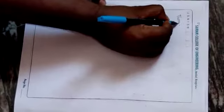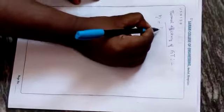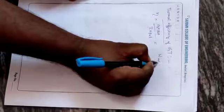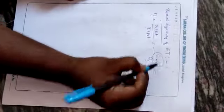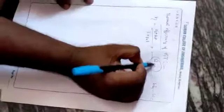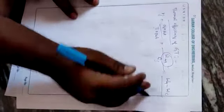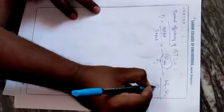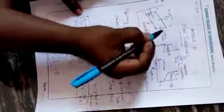Now we will see what is the thermal efficiency of the gas turbine. If you take the efficiency of any cycle, it is output divided by input — that is, net work done divided by heat supplied. Net work done is turbine work minus compressor work: W_net = WT − WC. Heat supplied is QS, which is the heat added in the combustion chamber.